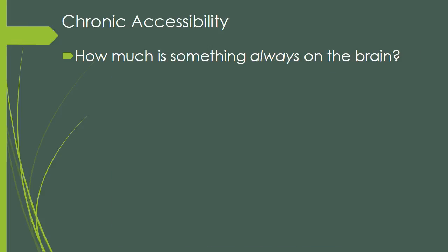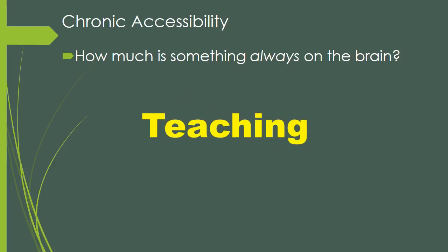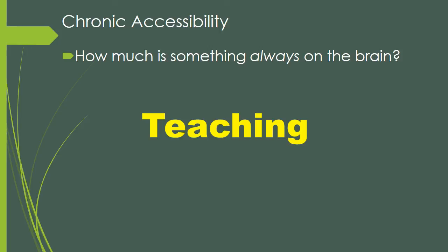Conversely, chronic accessibility has to do with how much something is always on the brain, no matter where you are. For me, unquestionably, teaching is always on the brain — I have high chronic accessibility for teaching. In any part of my life, if something happens, I often think about how I can use this to illustrate something for one of my classes. Or if I learn about a technique that helps students learn, I'll immediately start thinking about how to incorporate it into my classes. So teaching is something I have very high accessibility for — probably even when I'm diving, I'm thinking about teaching. Things that are chronically accessible are things that you're always, always, always thinking about.